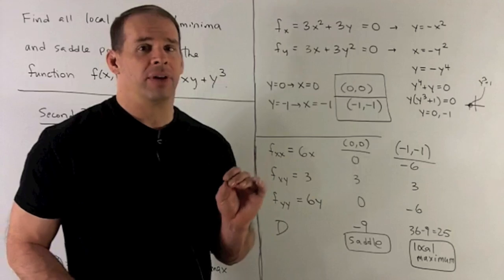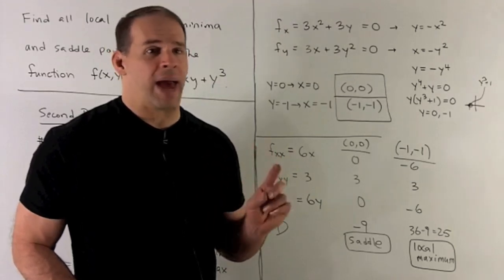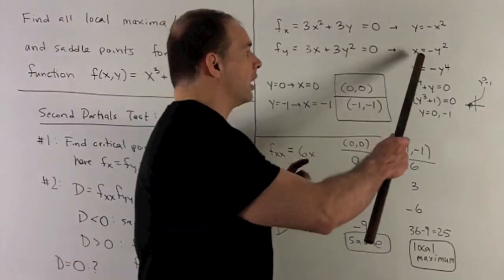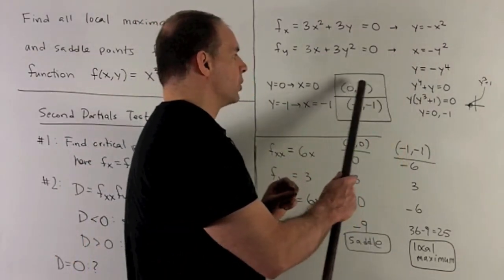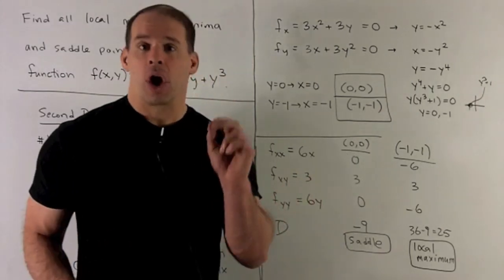So, we'll have our zeros at y equals 0 and minus 1. We put them back into this equation here. So, we'll get the points (0,0) and (-1,-1) as our critical points.